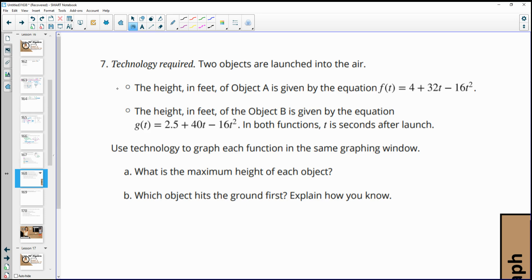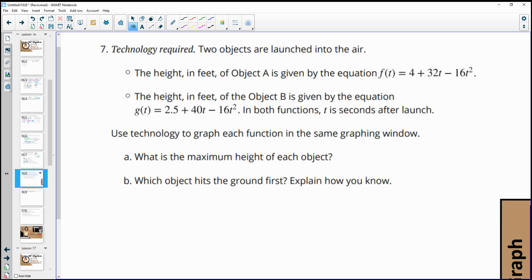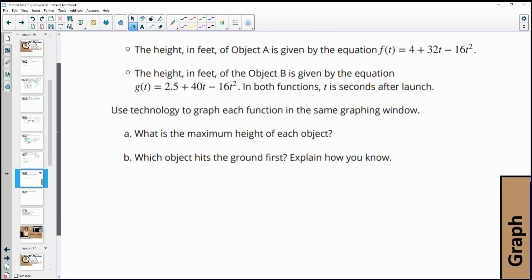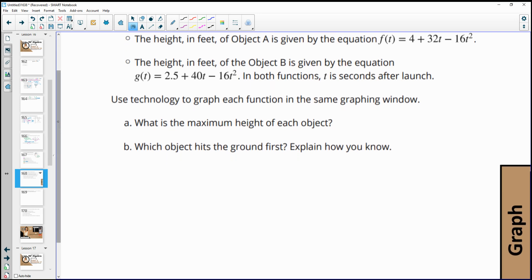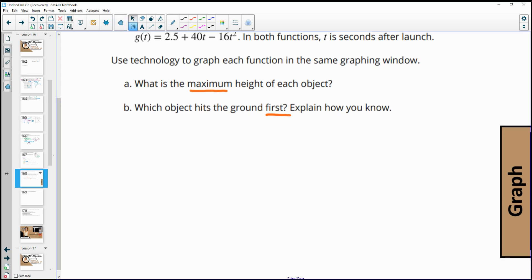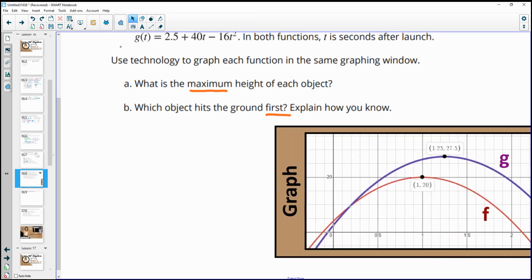Number seven, two objects are launched into the air. The height in feet of object A is given by this equation, and the height in feet of object B is given by this one. Both functions, T represents the seconds after the launch. So use graphing technology to graph each function in the same window. What's the maximum height of each object, and which object hits the ground first? So I graphed them here, and so we can see the maximum height of each. So for object F, the maximum height is 20,